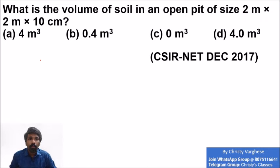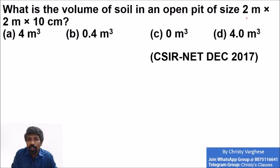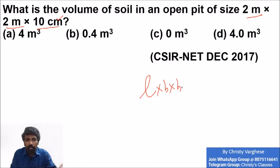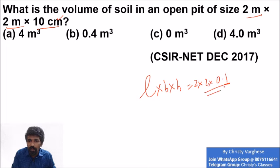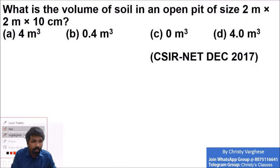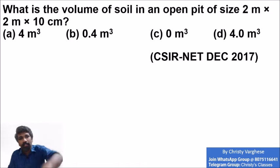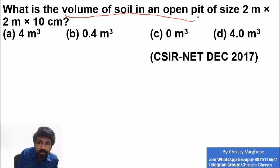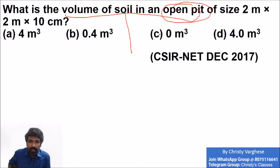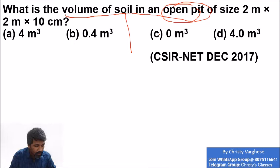The question asks for the volume of soil in an open pit of size 2 m × 2 m × 10 cm. A common approach would be to convert 10 cm to 0.1 m and compute 2 × 2 × 0.1 = 0.4 m³. But that is wrong — the question is not asking for the volume of the cuboid. It is asking for the volume of the soil inside the pit. The catch is that it is an open, empty pit.